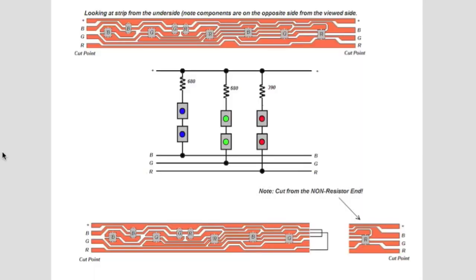And this drawing is of the back side of the LED strip. So, the little devices here, we have a blue LED, which is the larger one, and the narrow one is the resistor, and for green and red and so on. Those are actually on the opposite side of this. This is a schematic.